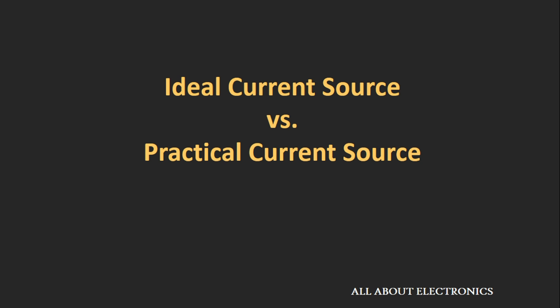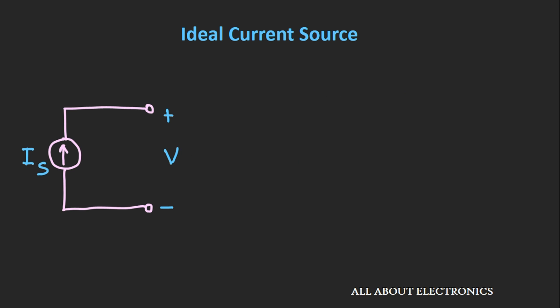Welcome to the YouTube channel all about electronics. Today we will see the difference between the ideal and the practical current source. If you see any ideal current source, it delivers a constant current to the load no matter what amount of voltage that appears across this current source.